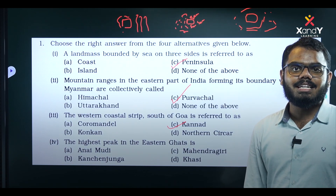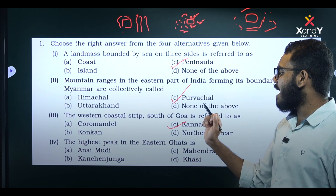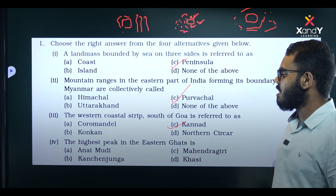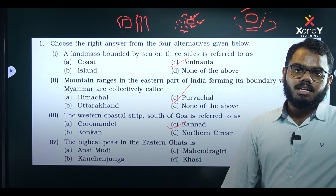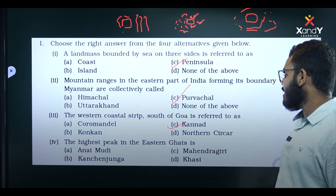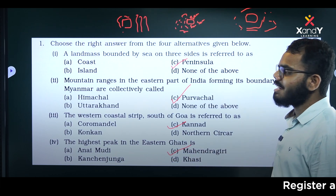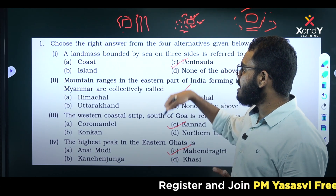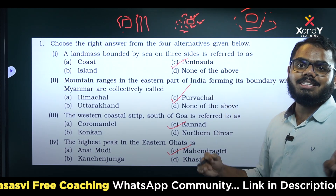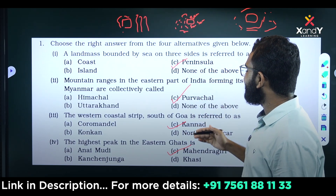What is the right answer for the highest peak? Are you wondering? What is Anamudi? Anamudi is a bit south — it's not going to be east and west. Is it Kanchenjunga, Mahendra Giri, or Kasi? Yes, Option C is the right answer — Mahendra Giri. Coincidentally, Option C is the answer again.